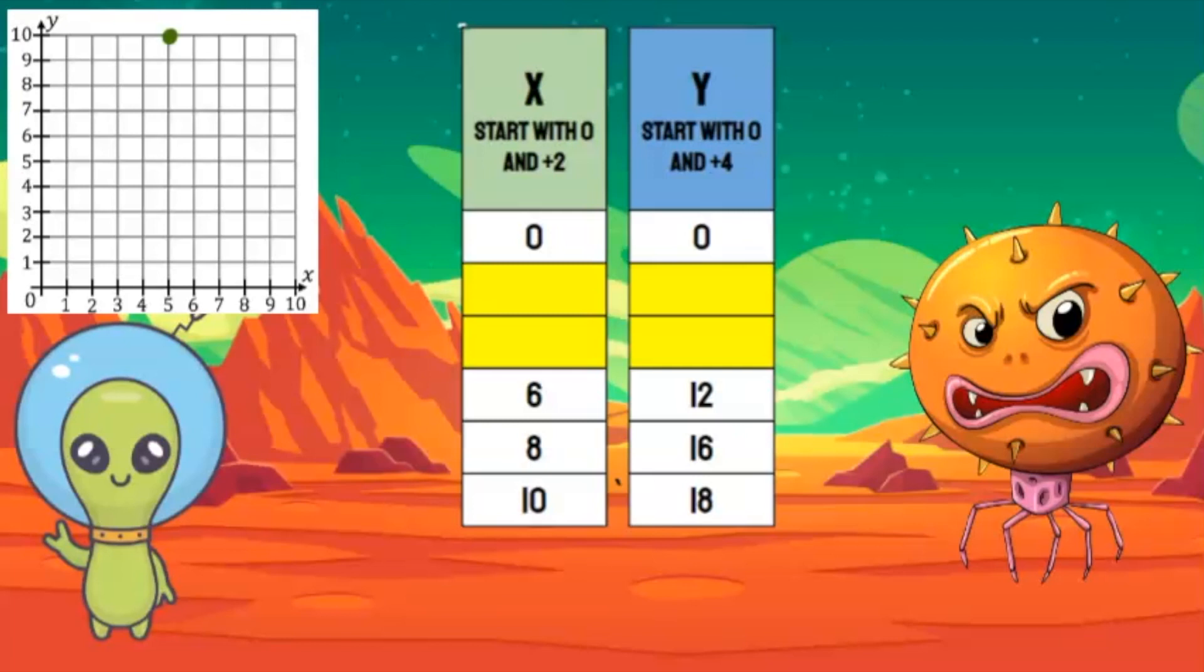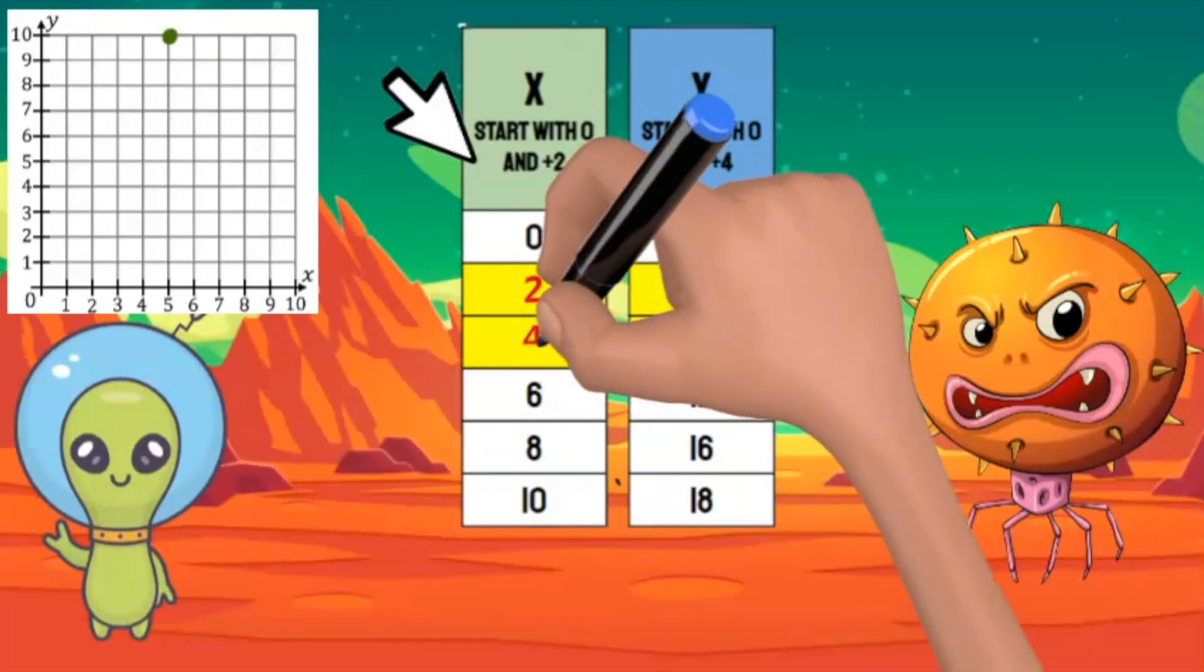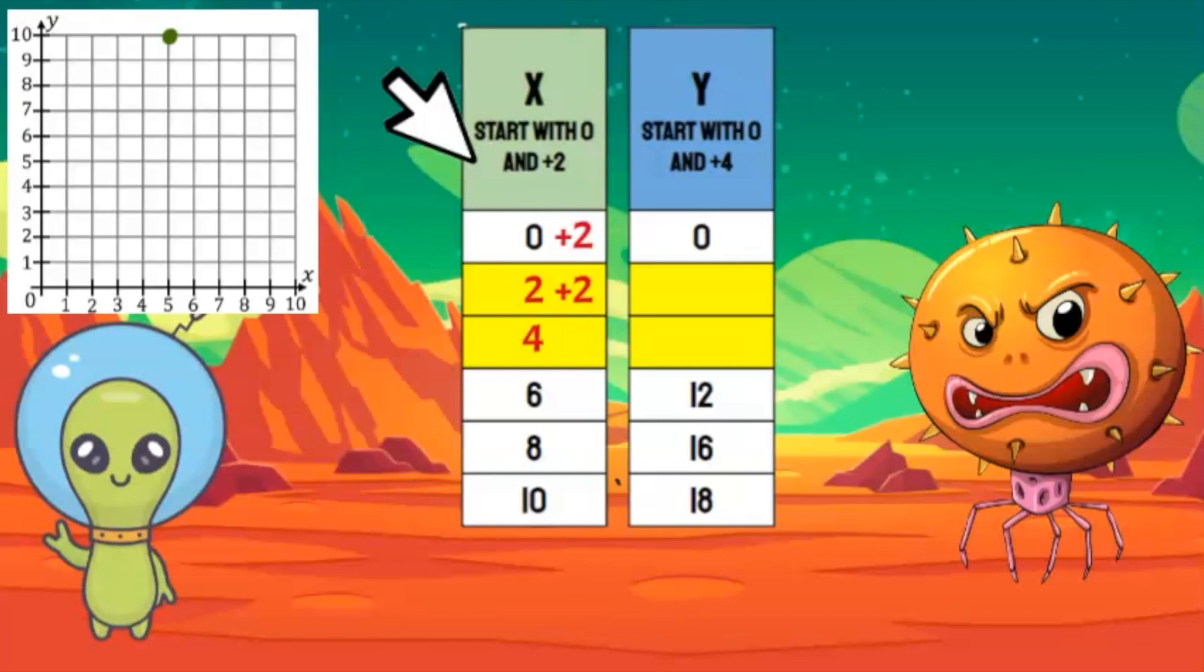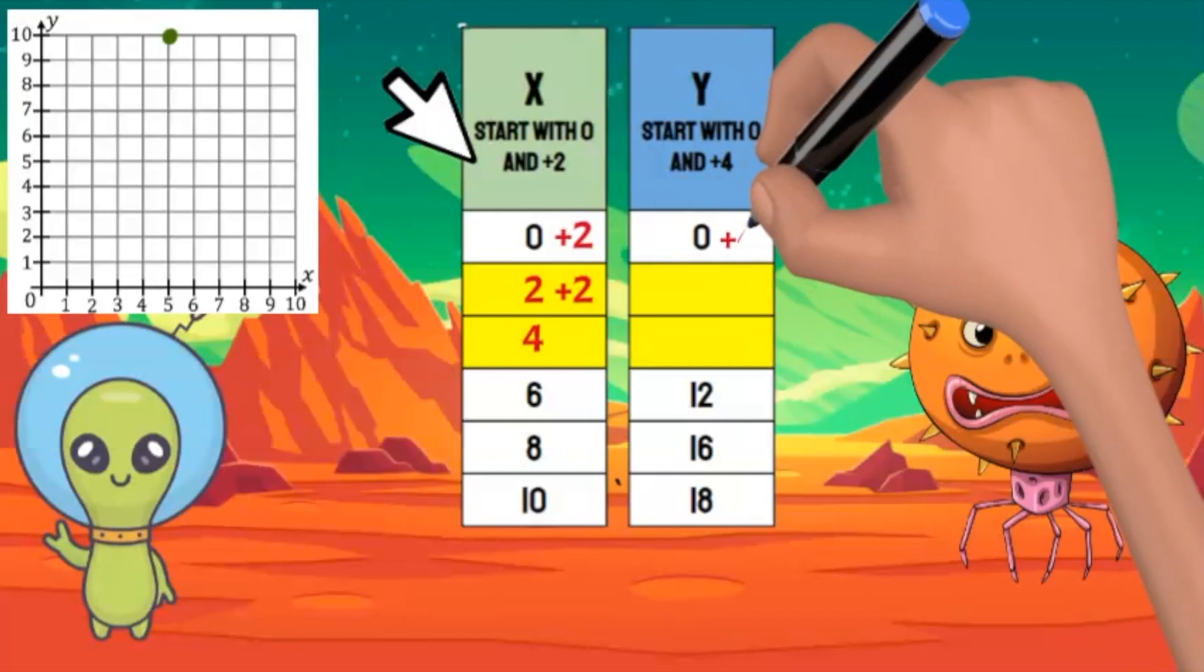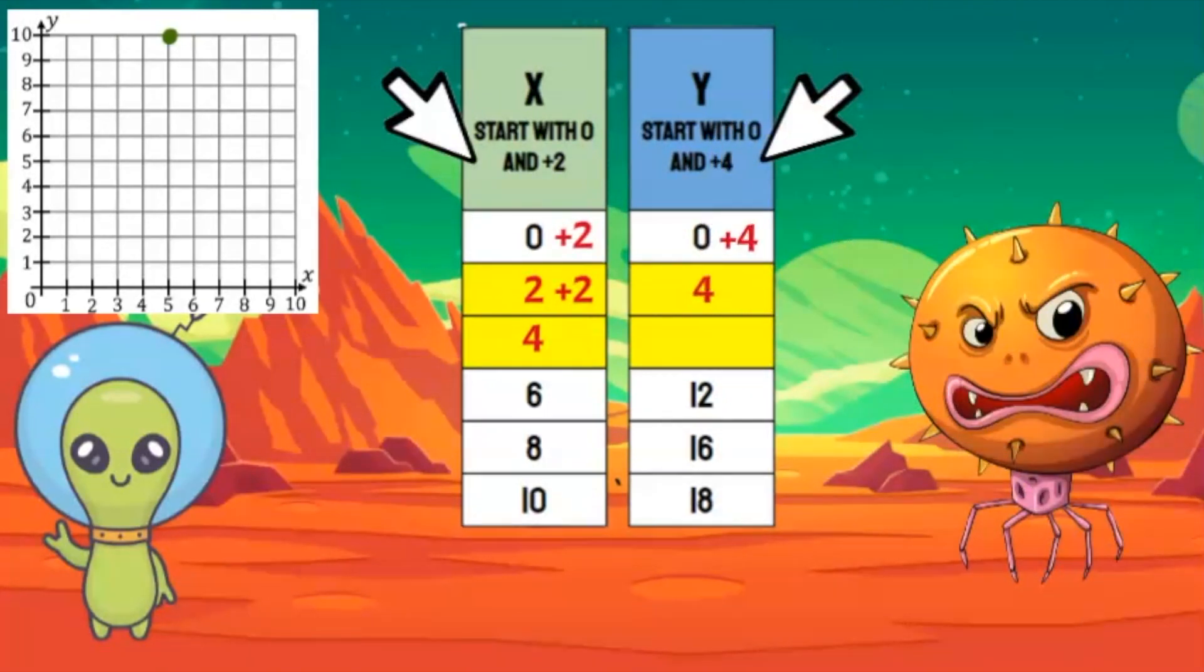I notice the rule for the X coordinate is to add two. Zero plus two equals two, the first X coordinate is two. Two plus two more is four, the second X coordinate is four. The rule for the Y coordinate is to add four. Zero plus four equals four, that's my first Y coordinate. Four plus four more equals eight, that's the next Y coordinate. Now I can plot two, four and four, eight.